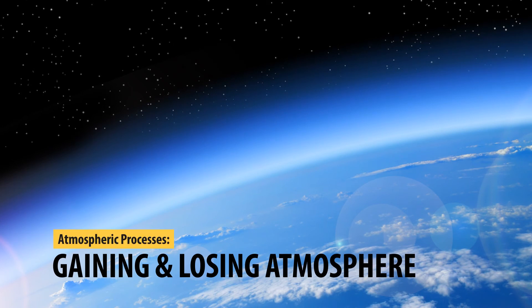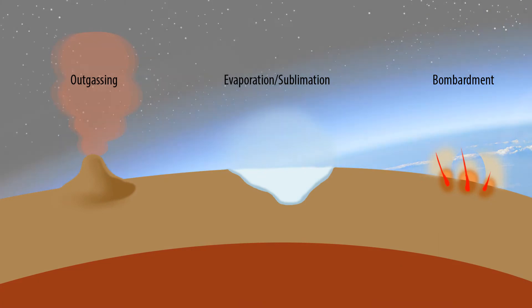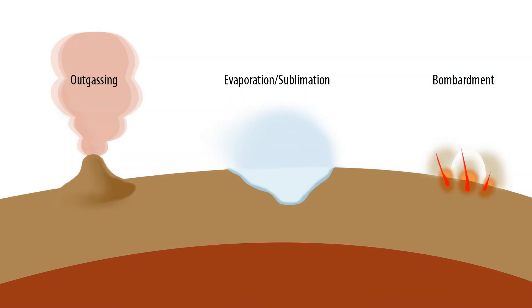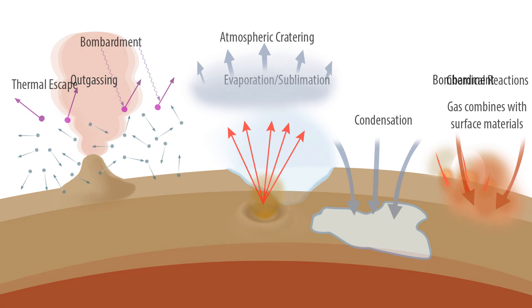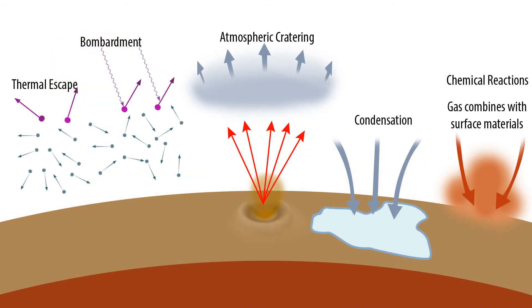Atmospheric processes include gaining and losing atmosphere. Gains include volcanic outgassing, impacts, and evaporation. Losses include gas escape, impacts, condensation, and surface reactions.